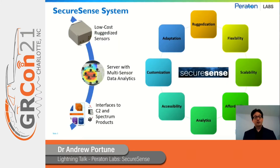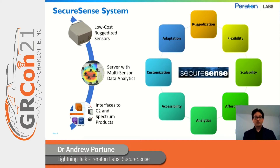When we look at the SecureSense system, it's comprised primarily of three different elements. The first are low-cost ruggedized sensors. The second is a back-end server, which performs multi-sensor data analytics, aggregating data from multiple sensors together in a way that's not possible with just a single sensor deployed. The third area is interfaces to command and control, as well as access to different spectrum data products prepared by the system.